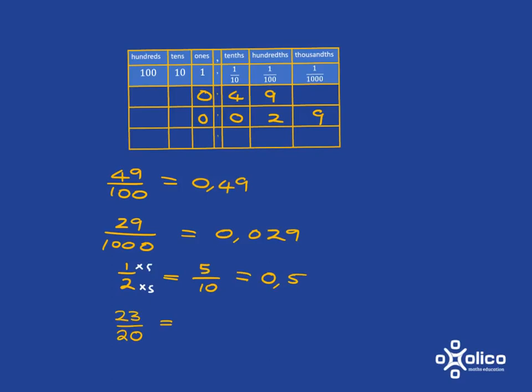What if we had something like 23 over 20? You should recognize this as an improper fraction. And the easiest way to deal with these is to first turn them into a mixed number. So 23 over 20. 20 into 23 goes once. Remainder 3. So it's 1 and 3 twentieths. The 1 is the whole number part. So we can put that in.